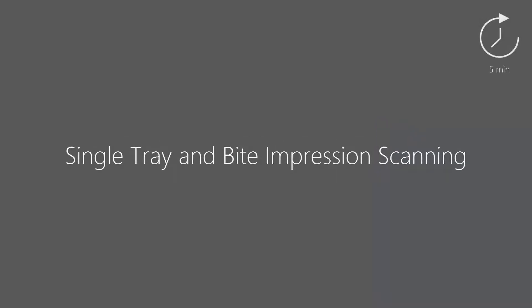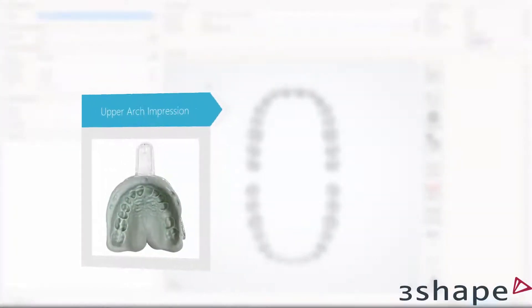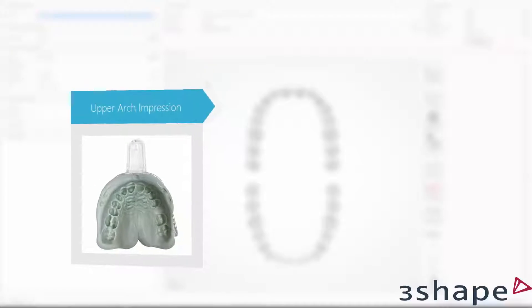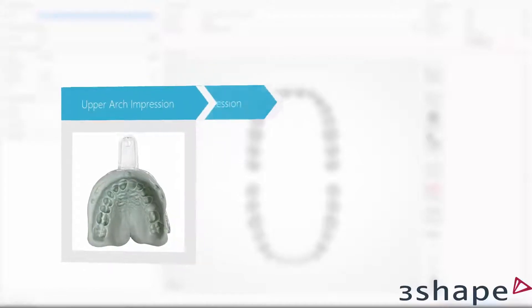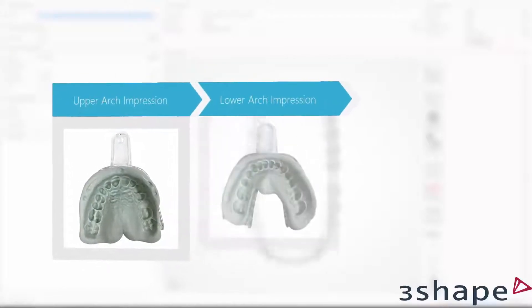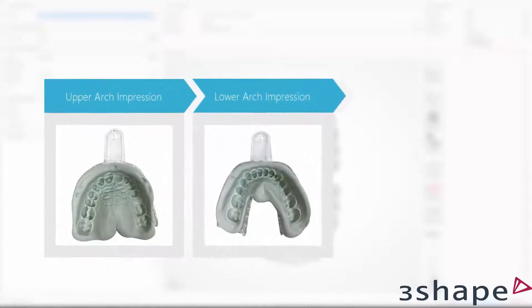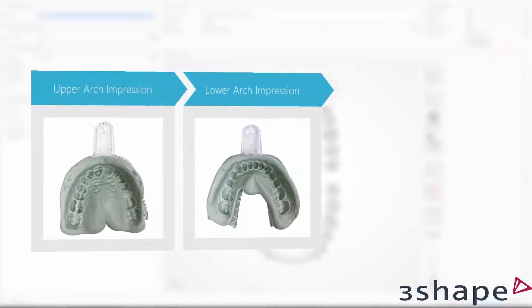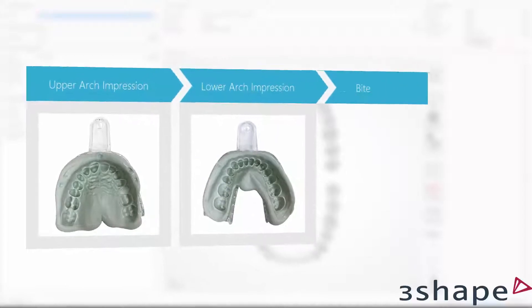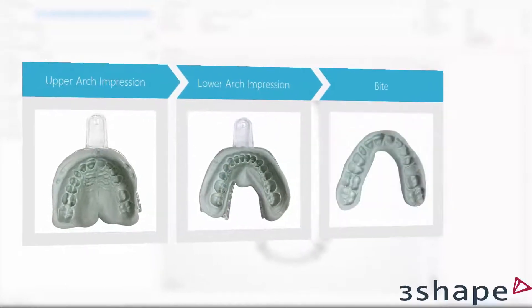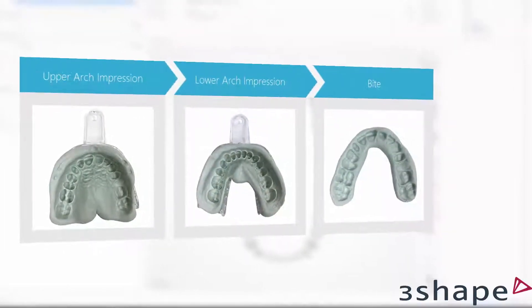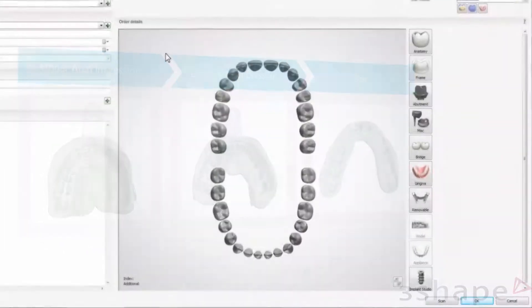Watching this video you will learn how to scan a single-tray impression with a bite. This type of workflow may be useful for model-less full anatomy crown production. It will save your time and resources on model production, and it allows dentists who are not yet Trios users to join model-less digital production.